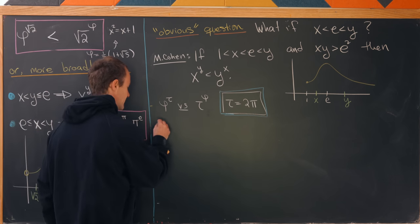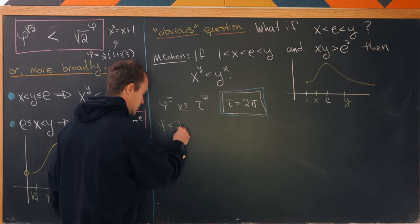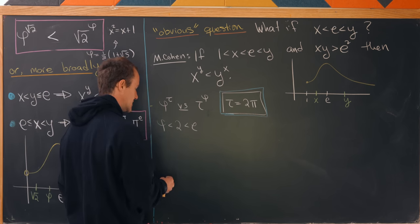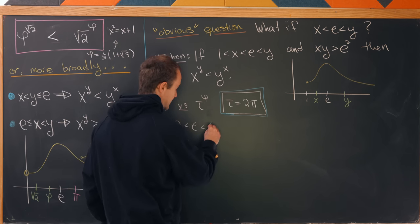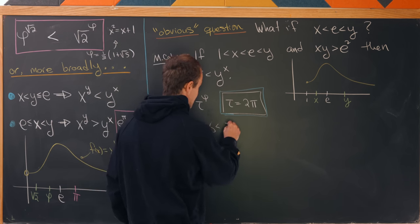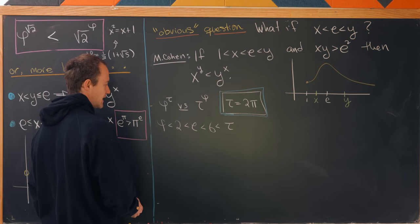we want to notice that phi is less than 2. And 2 is less than e. And e is less than 6, which in turn is less than tau. So, that means we, in fact, have phi and tau straddling e.